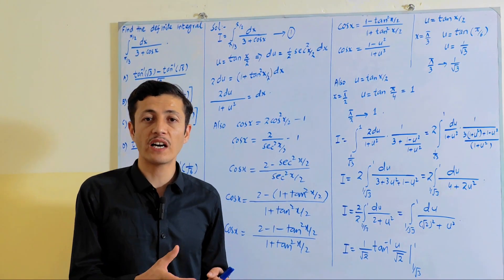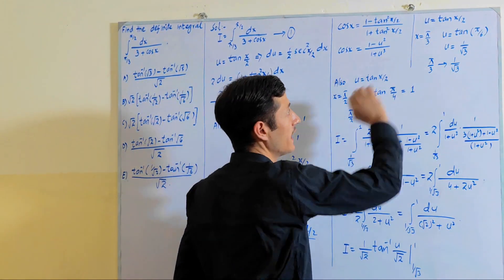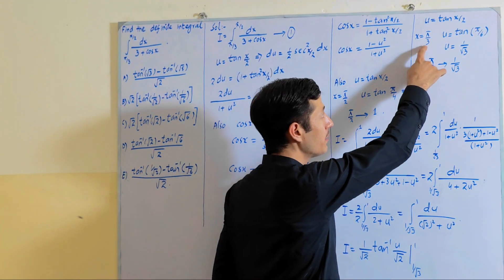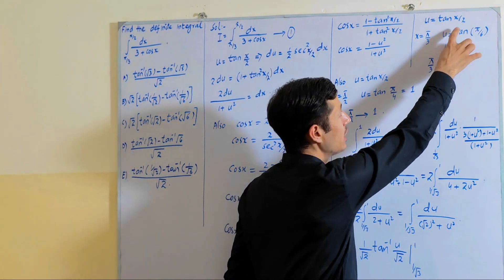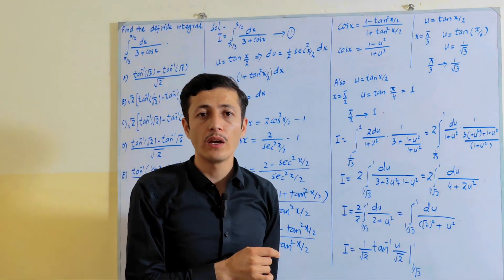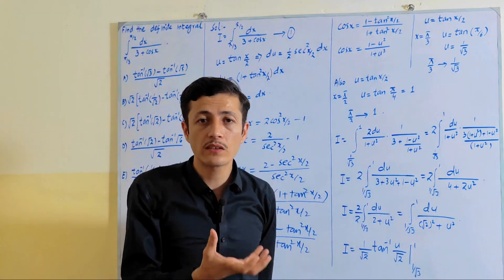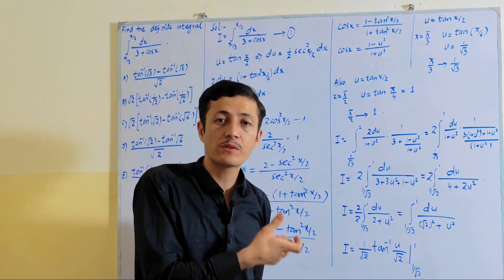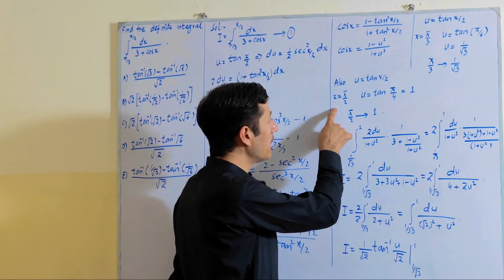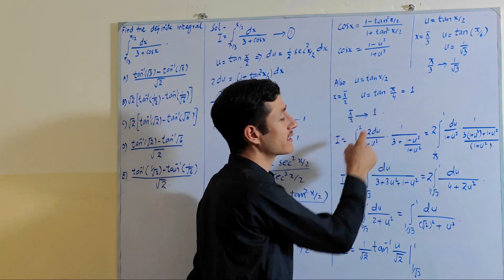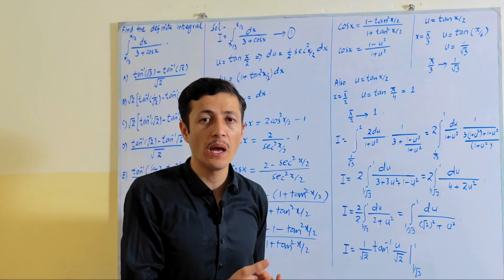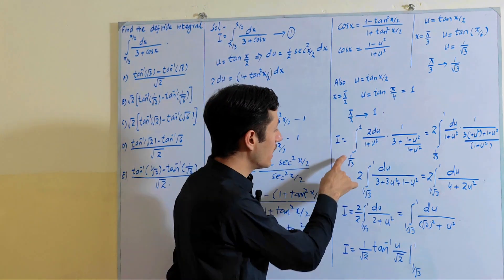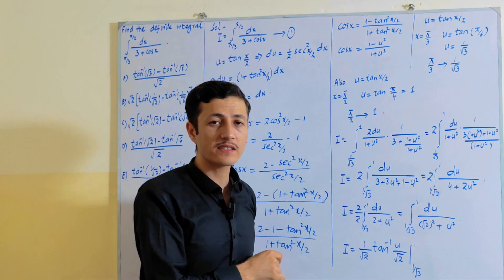The limit values also change because of the substitution u = tan(x/2). The lower limit was π/3, so substituting gives u = tan(π/6) = tan(30°) = 1/√3. The upper limit π/2 gives u = tan(π/4) = tan(45°) = 1. So the lower limit changes to 1/√3 and the upper limit changes to 1.